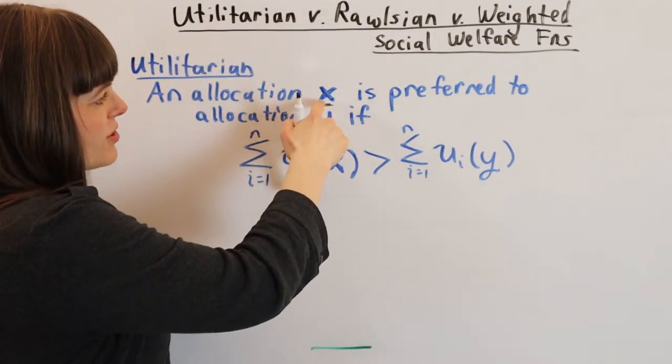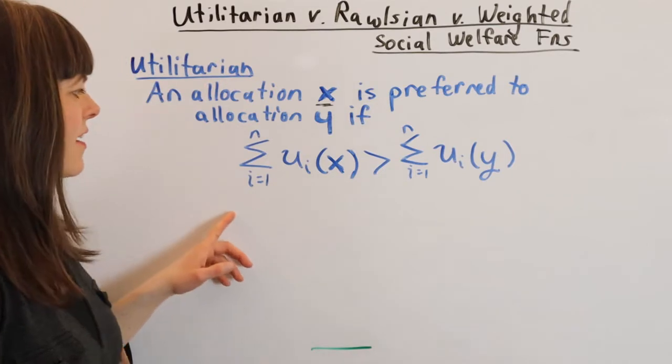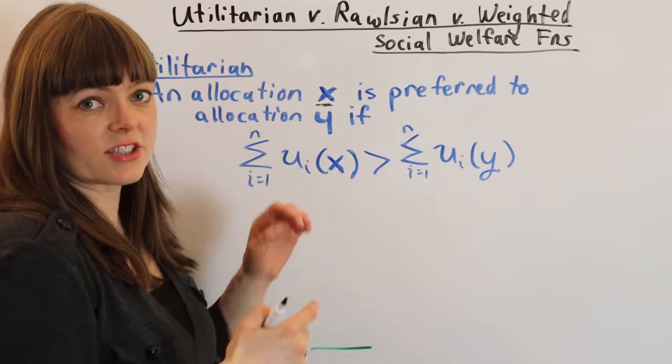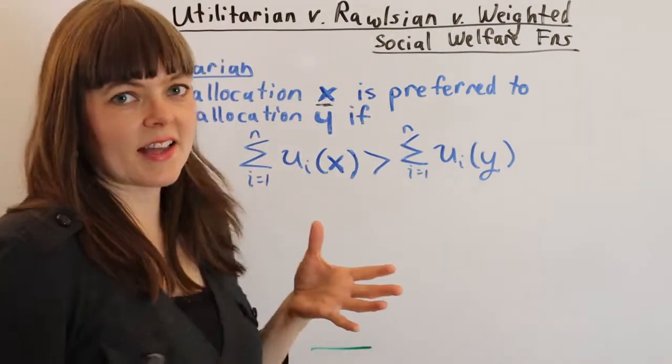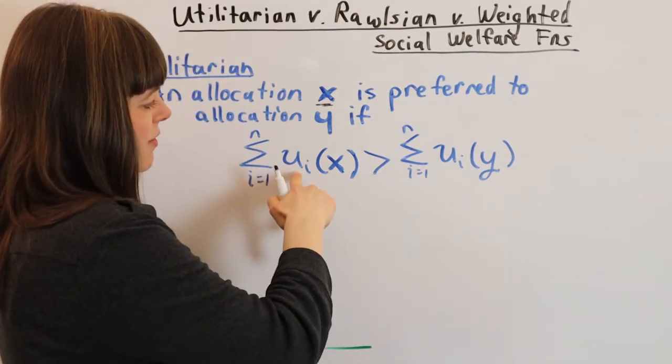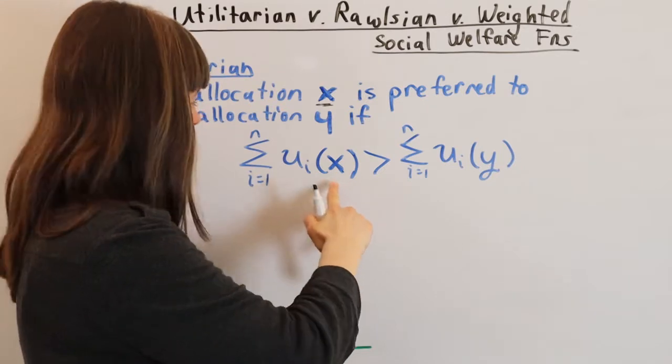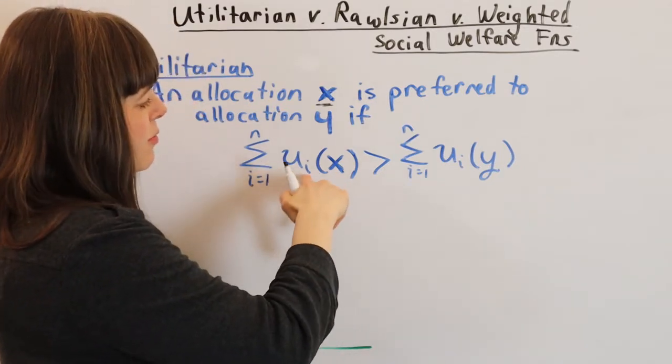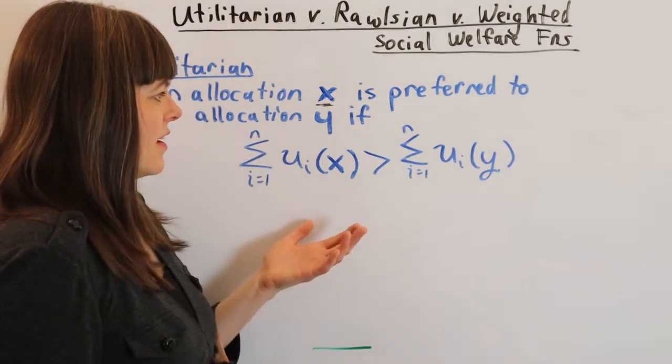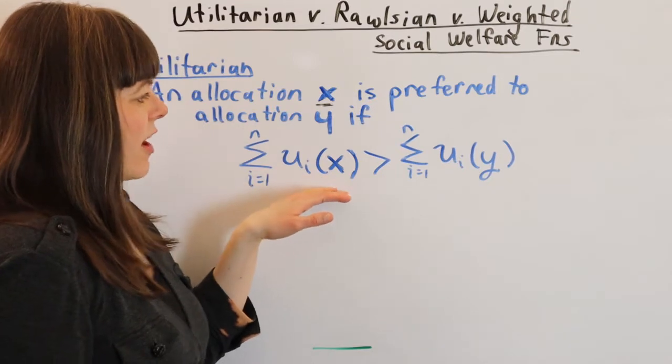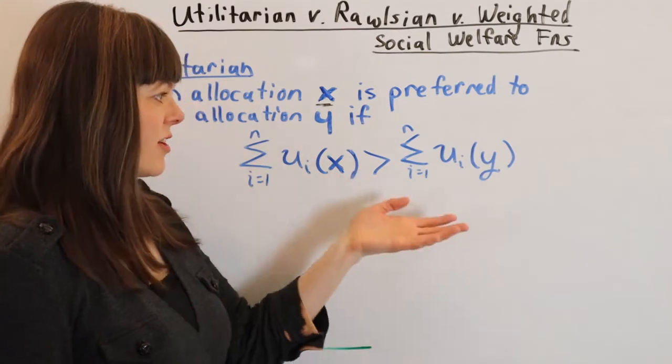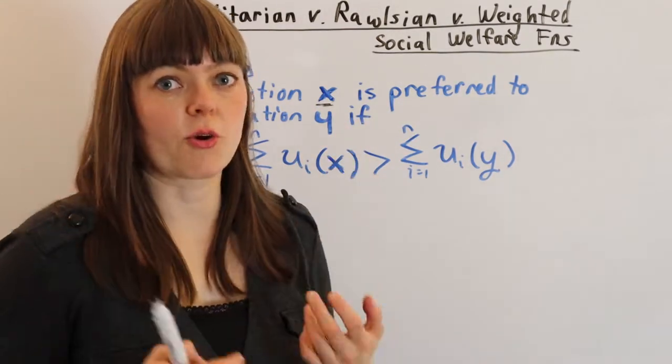X and Y are two different allocations. We're just summing up from i equals 1 to n, so n is just the number of people in our little society. In the roommate situation there's three people so n equals 3. It's just the utility of person one over that particular allocation, the utility of person two, utility of person three, and you just add up their utilities. Utilitarians say whatever allocation gives the greatest summation of utility to the greatest number of people, that's going to be preferred.